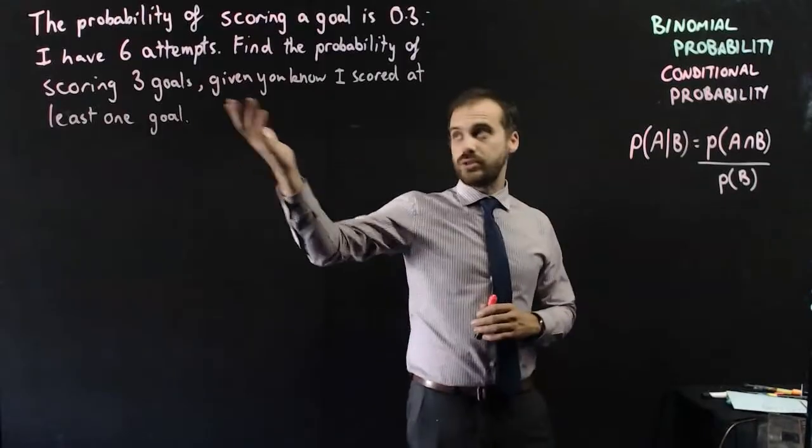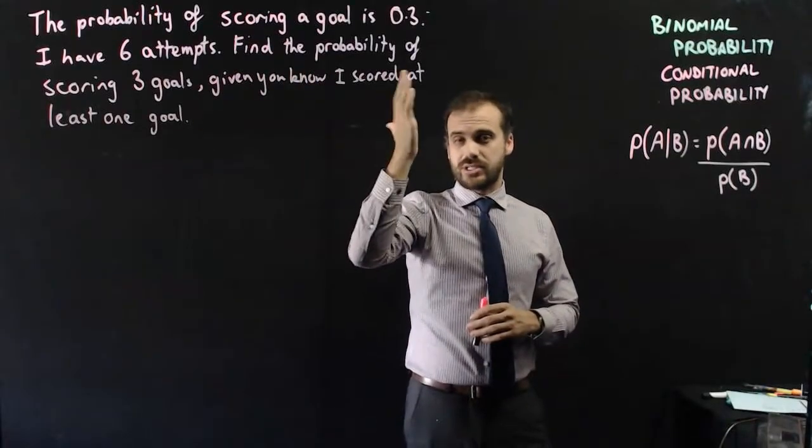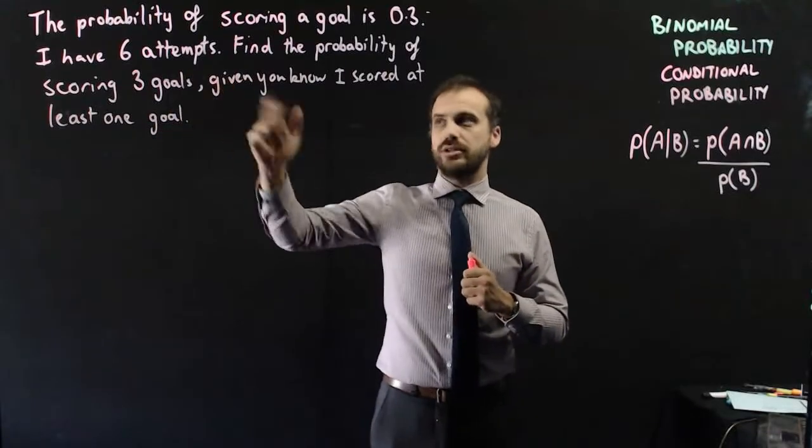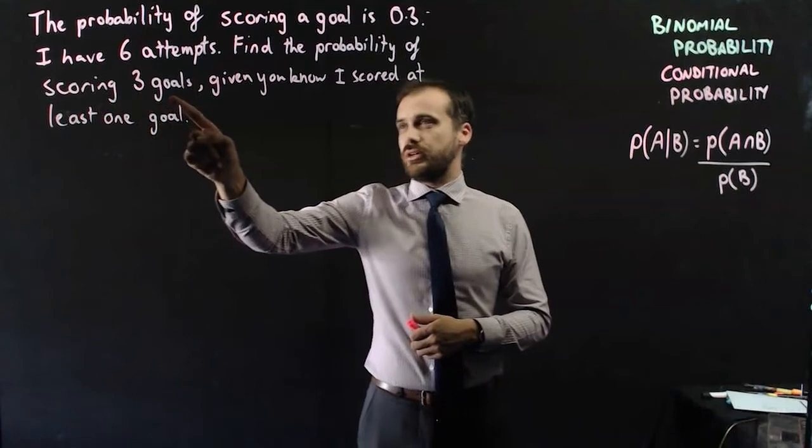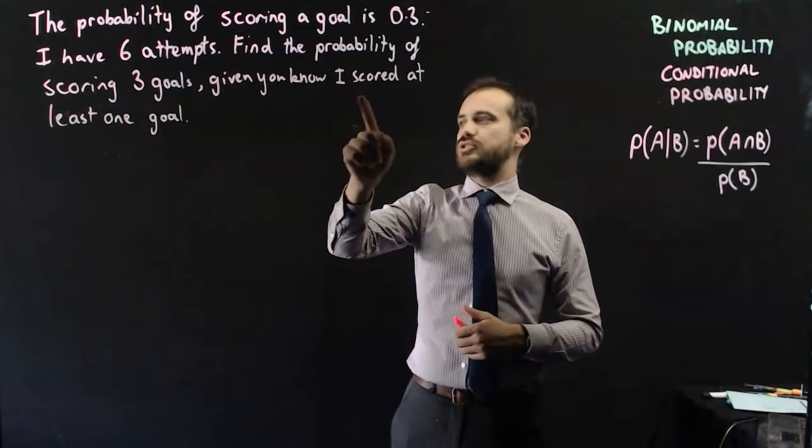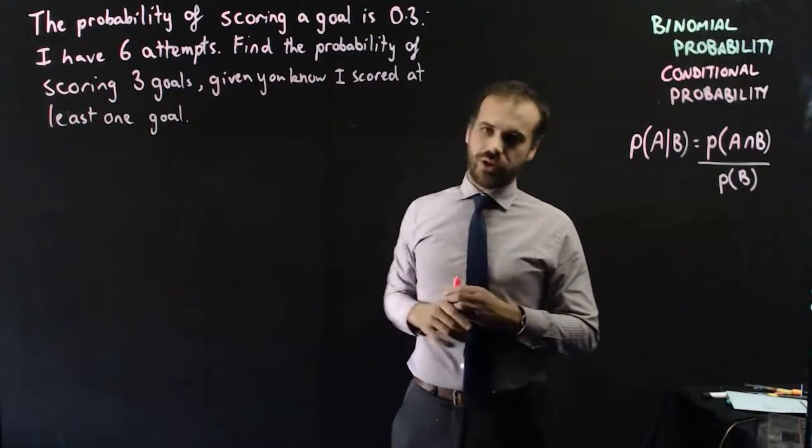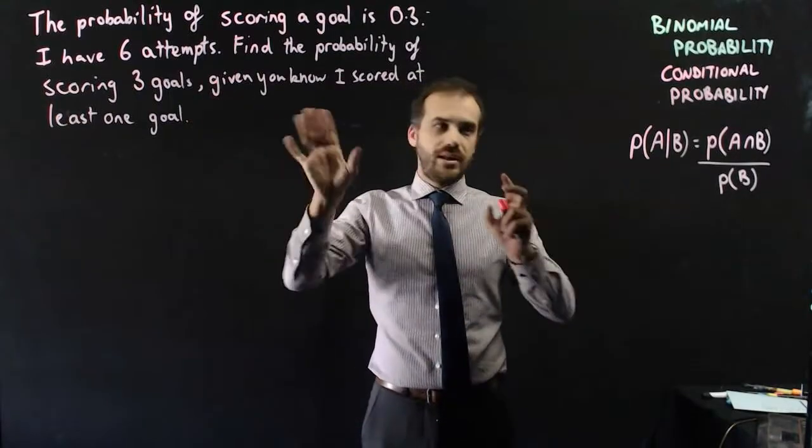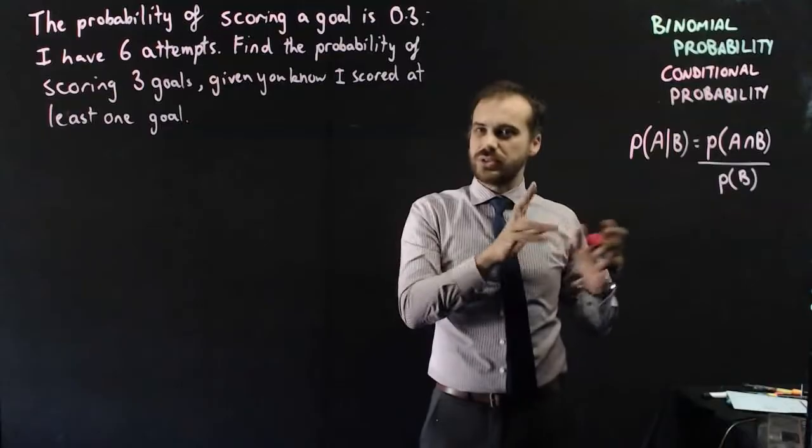Let's do a question. So the probability of scoring a goal is 0.3. Any sport, I don't care. I have six attempts at goal. Find the probability of scoring three goals given you know I scored at least one goal. So you can see the word given there, which is a given. And now we just need to figure out what's going on here.